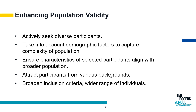Inclusive recruitment strategies play a pivotal role in bolstering population validity. Implementing approaches that actively attract participants from various backgrounds helps mitigate biases that may arise from a more limited sample. By fostering diversity in recruitment, researchers contribute to a more representative and applicable study, thereby strengthening the study's external validity. Lastly, broadening inclusion criteria is a deliberate strategy to encompass a wide range of individuals. By intentionally expanding the criteria for participant eligibility, researchers foster a more comprehensive understanding of how their findings may apply to different segments of the population. This thoughtful approach enhances the study's population validity, allowing for more robust generalizations that capture the richness and diversity of real-world scenarios.